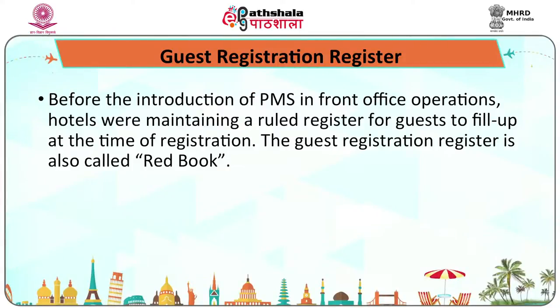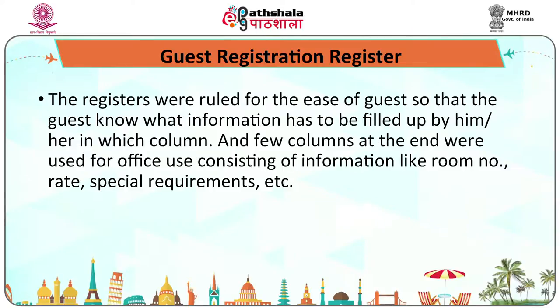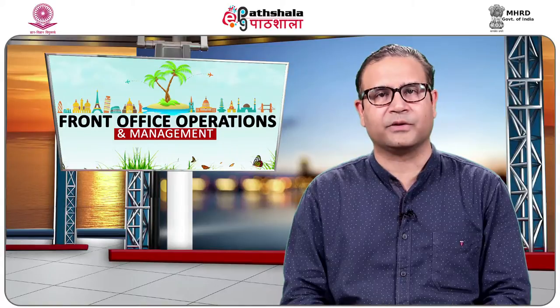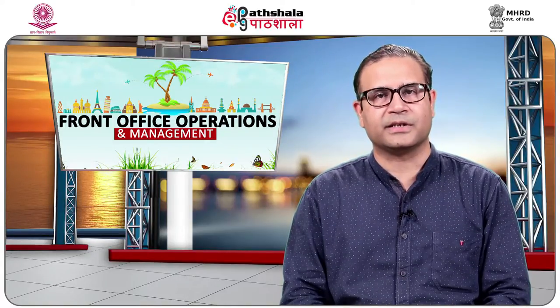The check-in process can be done in several ways: non-automated check-in using a guest registration register, a guest registration card, or automated check-in. Before the introduction of PMS in front office operations, hotels maintained a ruled register for guests to fill at the time of registration. The guest registration register is also called the red book. Registers were ruled for ease of guests so they knew what information to fill in each column, with a few columns reserved for office use — room number, rate, special requirements, etc. Nowadays, this register is largely out of place and only a few small hotels may still use it.